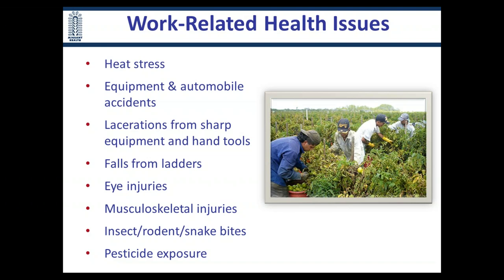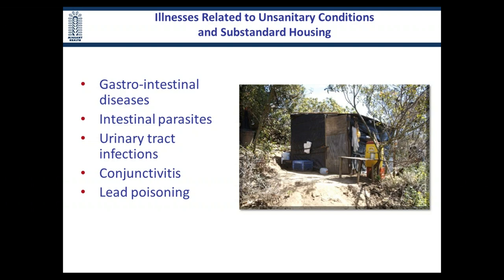Other work-related health issues include heat stress, equipment-related injuries, falls from ladders, insect and snake bites, and pesticide exposure. It's important to ask about the type of employment to conduct an accurate assessment of the presenting problem. Illnesses related to unsanitary conditions and substandard housing include gastrointestinal diseases, intestinal parasites, urinary tract infections, conjunctivitis, and lead poisoning. There are a lot of risks associated with agricultural work.